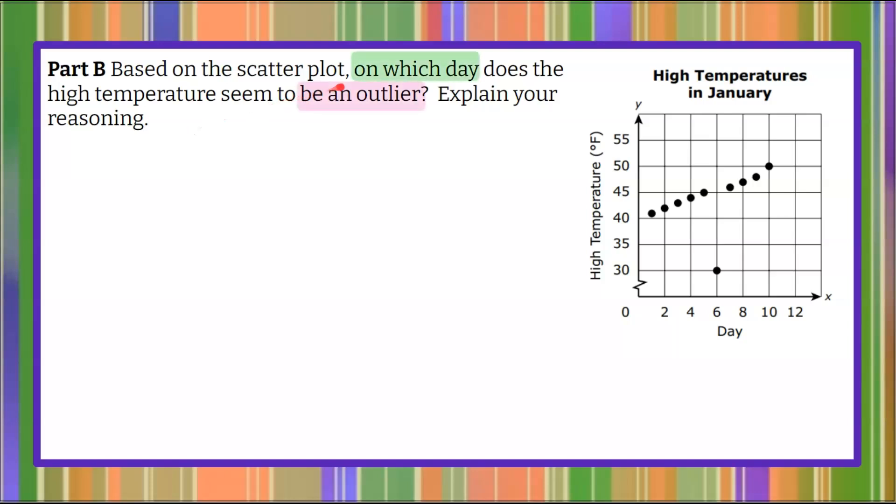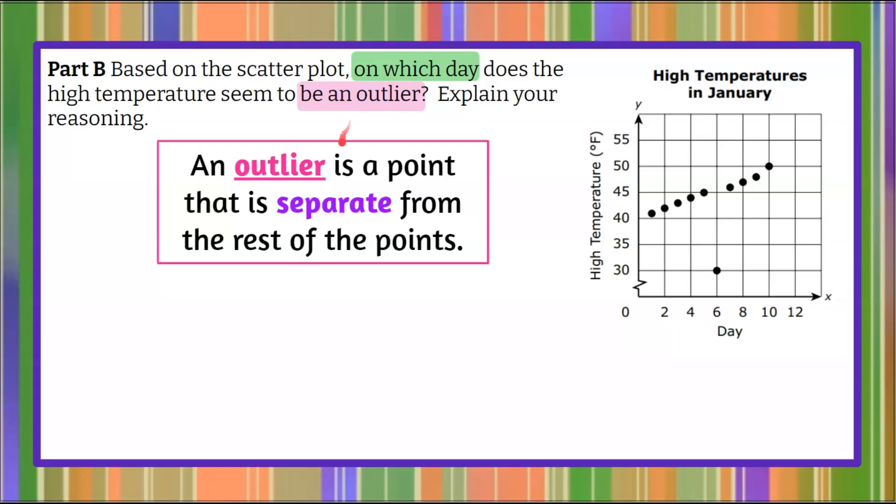Welcome back. Here, which day does there appear to be an outlier? That's what we're trying to uncover. To begin, let's review what an outlier is. By definition, an outlier is a point that is separate from the rest of the points. So if we look at our scatterplot here, we can see that all but one of our data items is between 40 and 50 degrees between these number of days. We look and we can see that we have one lonely data point outside of the traditional data area. So this is what we call an outlier because it is separate from the cluster of major data.